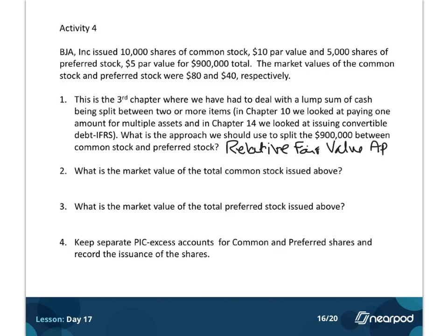And now if you didn't remember it, you're like, oh, okay, now I remember that thing where you add up the fair values and then use them as a percentage. Okay, so then just to get you set to do the relative fair value approach, question two says, what is the market value of the total common stock issued? I issued 10,000 shares, and the market value for the common was $80 a share. So if you do that math, $80 times 10,000 shares, that's going to give you $800,000.